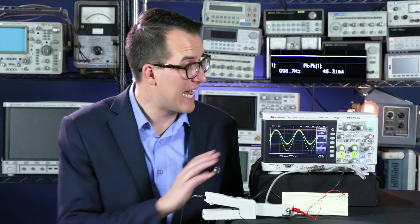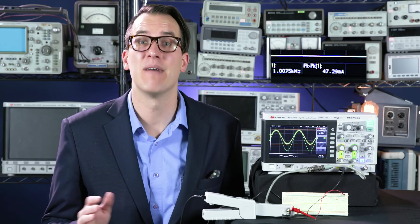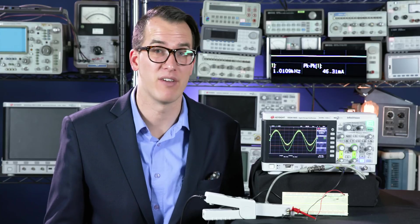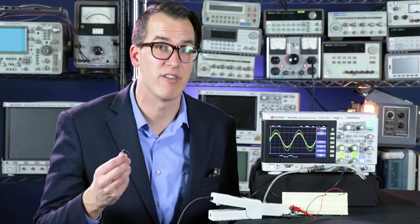I should also point out I'm in averaging acquisition mode because clamp-on current probes are notoriously noisy. If you don't know what that means, check out my video in Season 1 where I talk about acquisition modes. Now let's see what happens to the current if I keep the voltage the same but add another resistor.